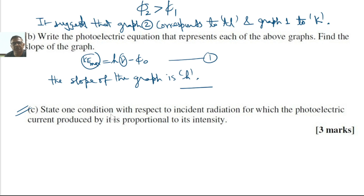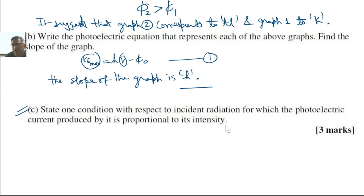Answering part C: state one condition with respect to the incident radiation for which the photoelectric current produced is proportional to intensity. The condition is that one incident photon causes the emission of one electron.